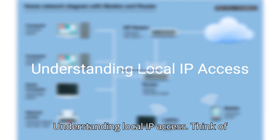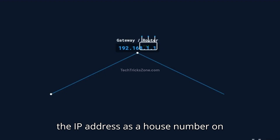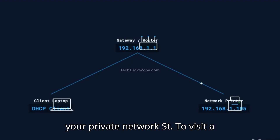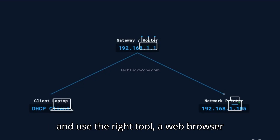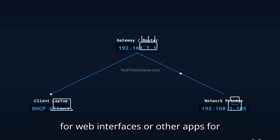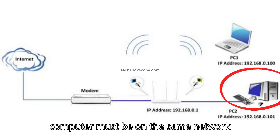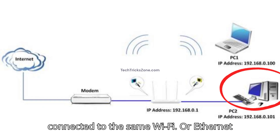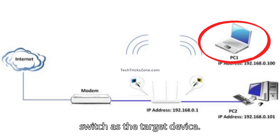Think of the IP address as a house number on your private network street. To visit a device, you just need to know its number and use the right tool — a web browser for web interfaces, or other apps for specific services. The key rule: your computer must be on the same network, connected to the same Wi-Fi or Ethernet switch as the target device.